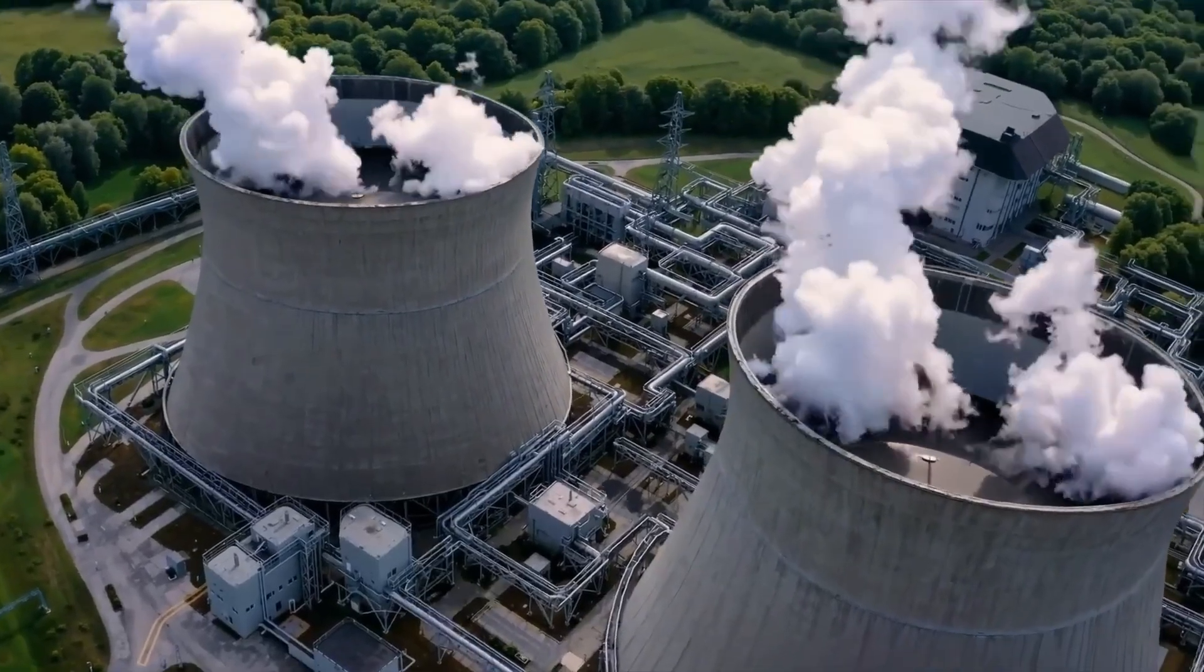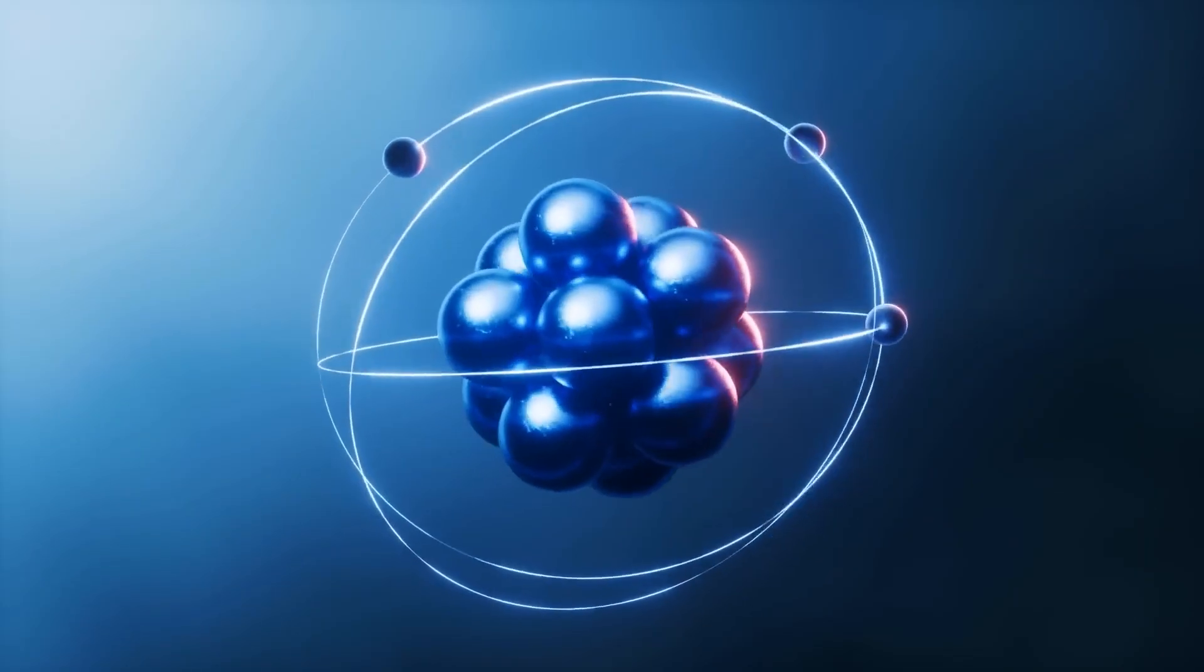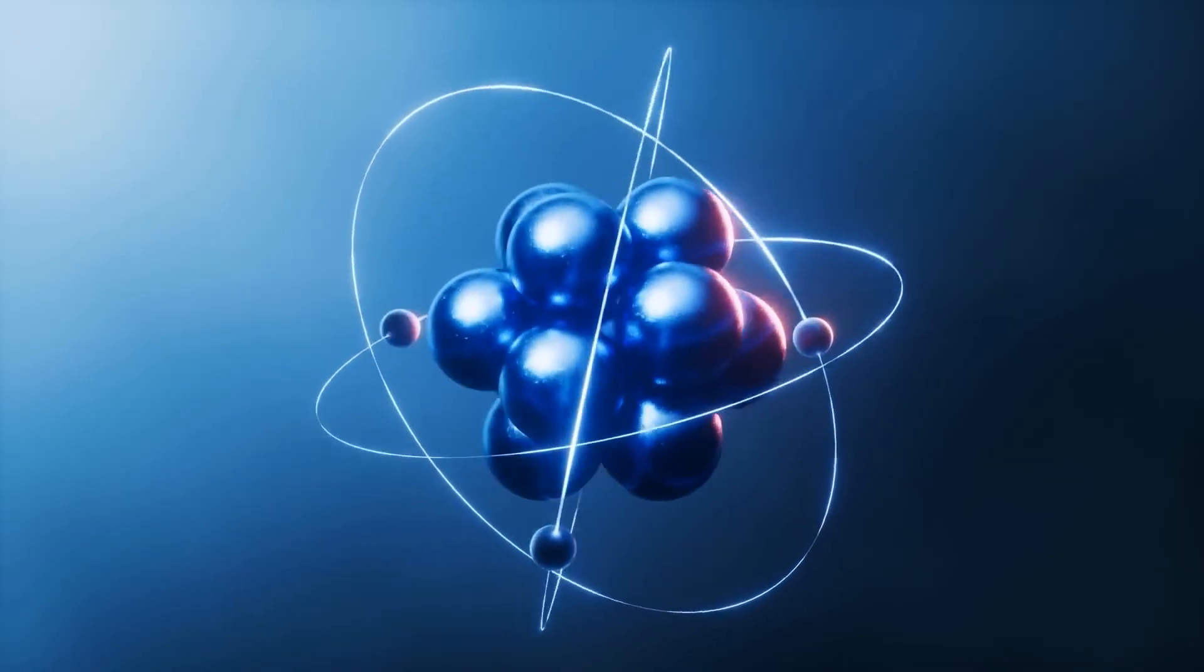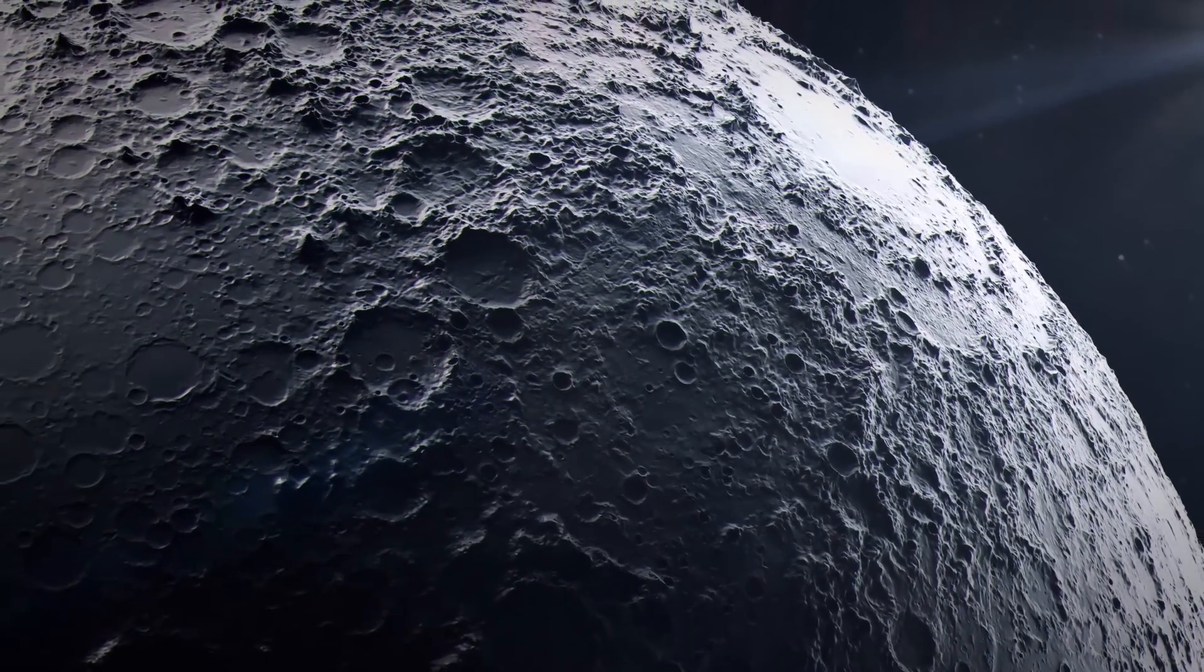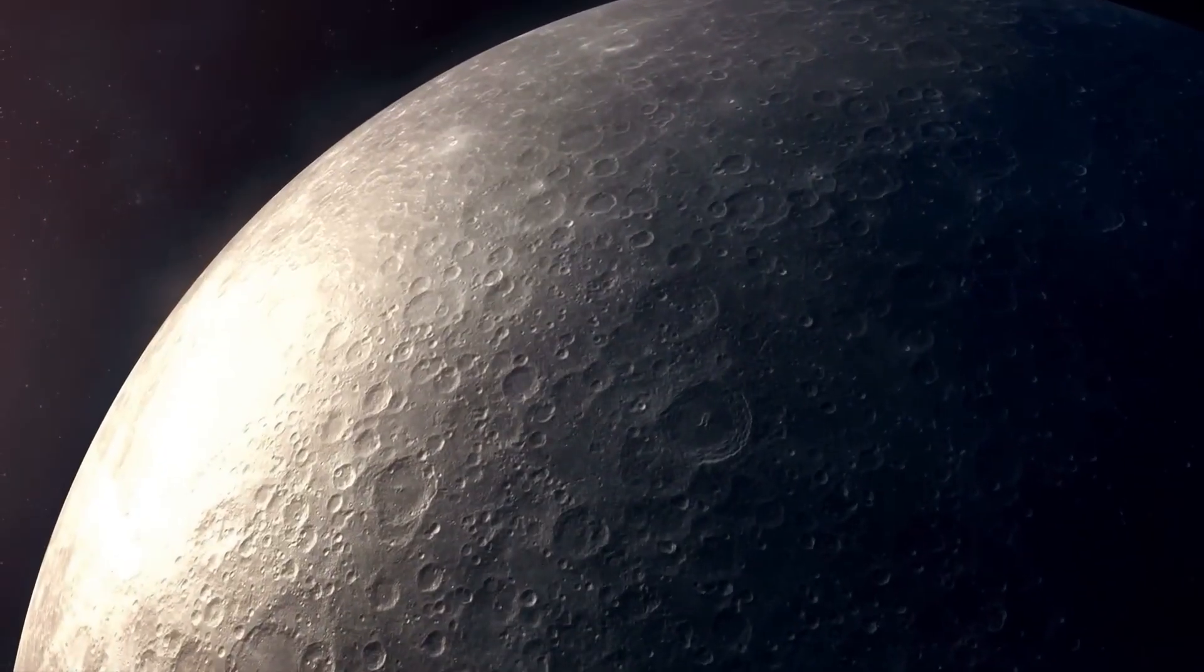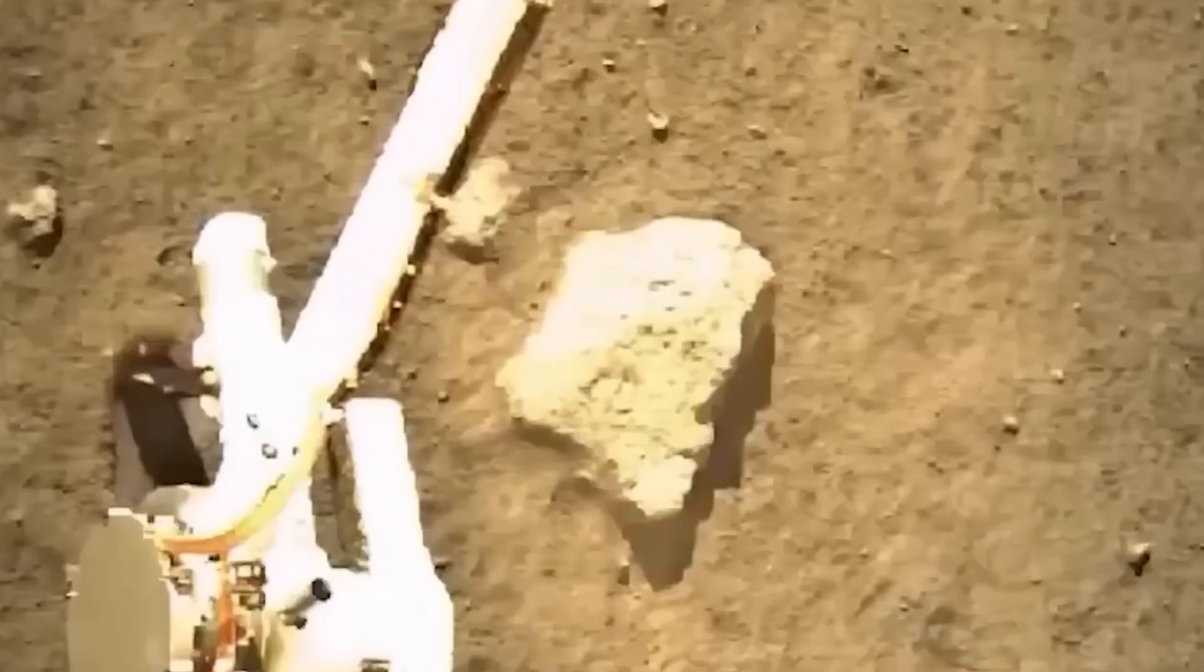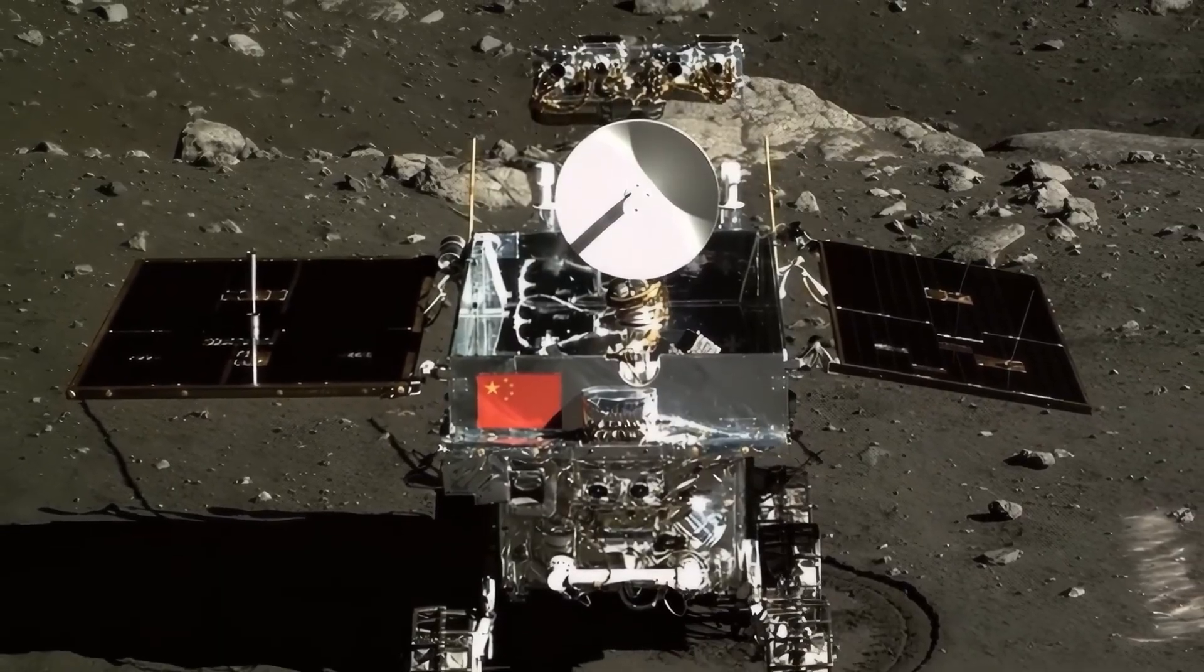Why? Because helium-3 is one of the most promising fuels for nuclear fusion, a form of clean energy that, if we can ever unlock it, could power the planet for thousands of years. The problem? Earth barely has any. But the moon has been bombarded with it by the solar wind for billions of years. And now we know for sure, it's locked inside lunar minerals. China didn't just find rocks. They found a potential energy revolution buried in the dust. And if they control the supply, they may control the future of global power.